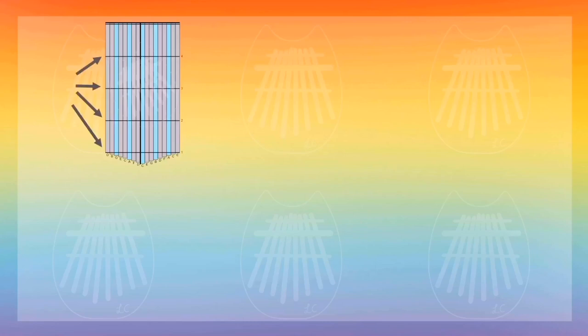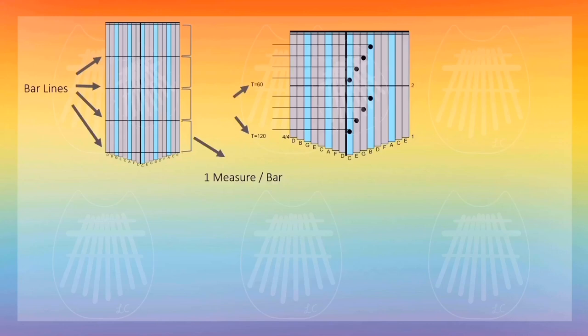You can see there are lines on kalimba tabs. These lines are called bar lines. Bar lines are used to divide up a complete bar. From one bar line to the next bar line, it makes one bar or measure.